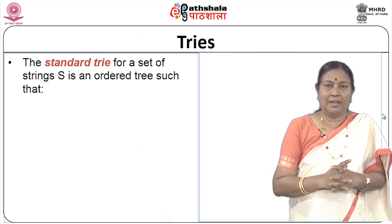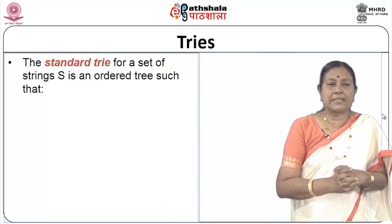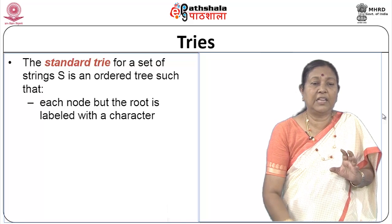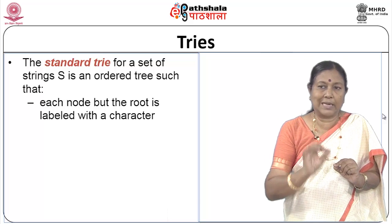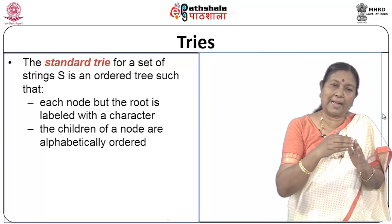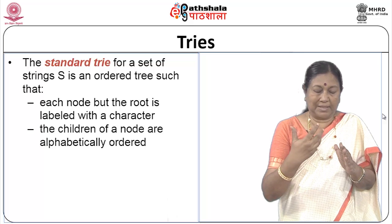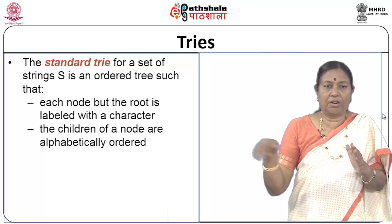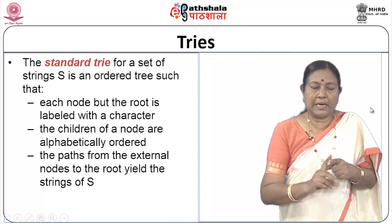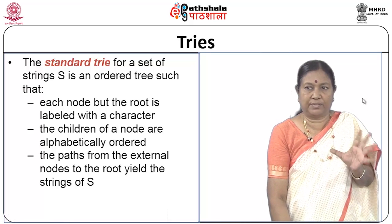There are different types of trie. A standard trie for a set of strings S is an ordered tree such that each node but the root is labeled with a character, and the children of each node are in alphabetic order. The paths from external nodes to the root yield all strings of S. A standard trie uses approximately O(n) space, where n is the number of words, and operations find, insert, and remove take O(dm) time, where m is the size of the string parameter and d is the alphabet size.